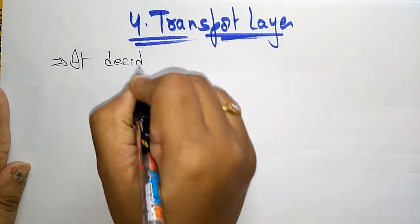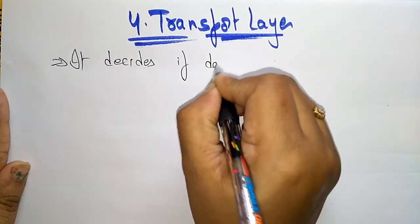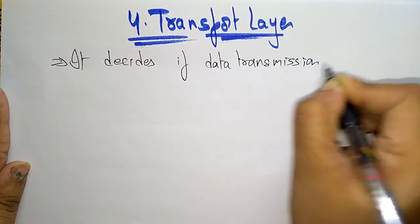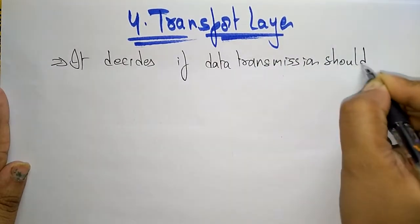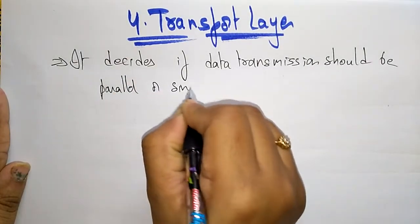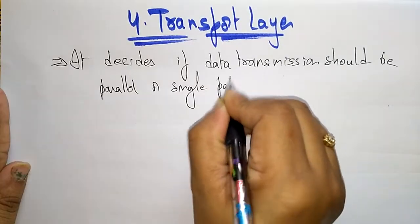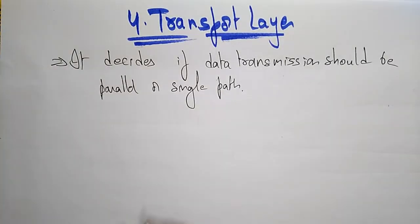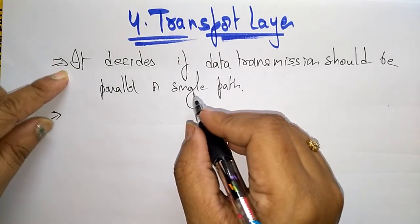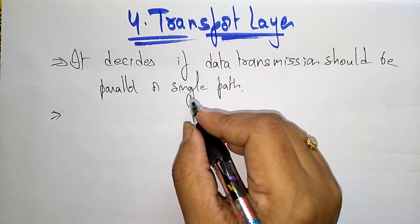The transport layer decides if data transmission should travel in a parallel path or in a single path. So the first function of the transport layer is deciding whether data should be transmitted in a parallel path or a single path.